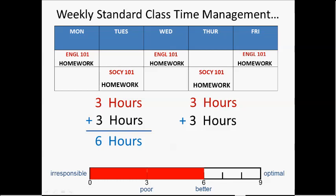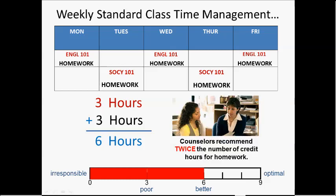But it's still not the optimal amount of time. If you're not good at that subject, or perhaps not a good reader, counselors recommend that you spend twice the number of credit hours as a guide for how much time you should be spending on homework in any class. This is a three-credit class, so twice three would be six hours of homework in addition to the scheduled class time. That again would come to nine hours per week as the optimum amount of time to spend on that subject.